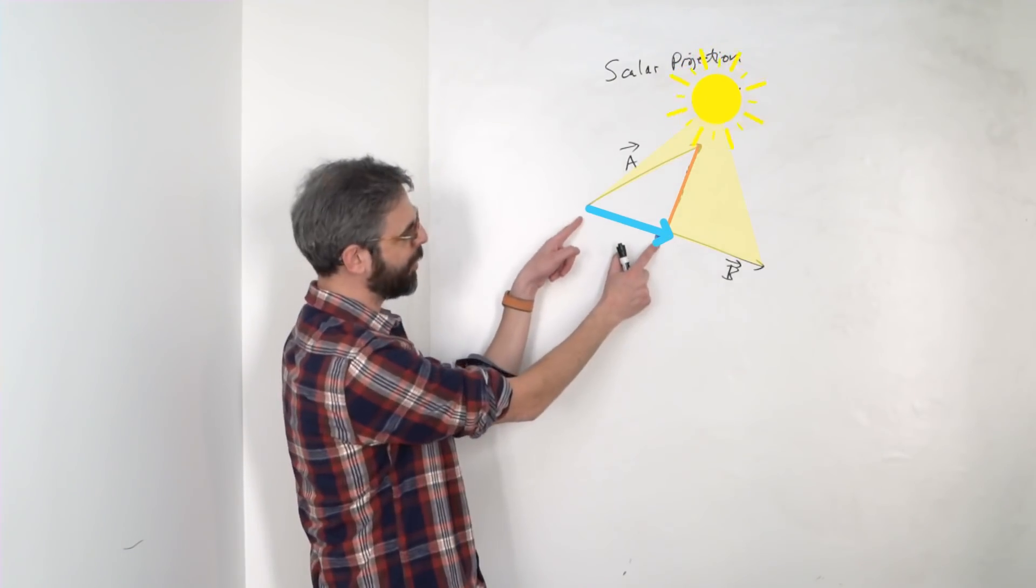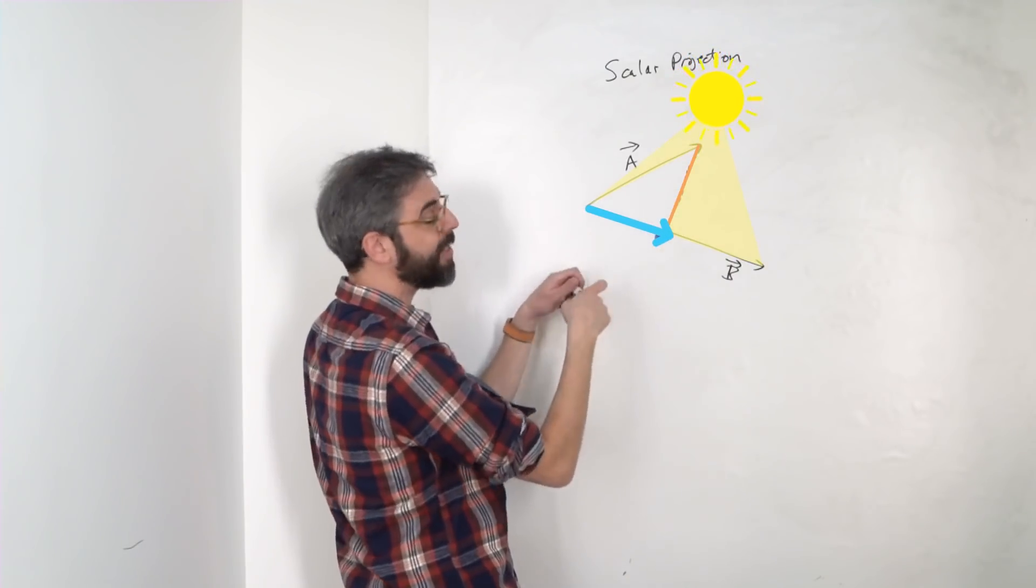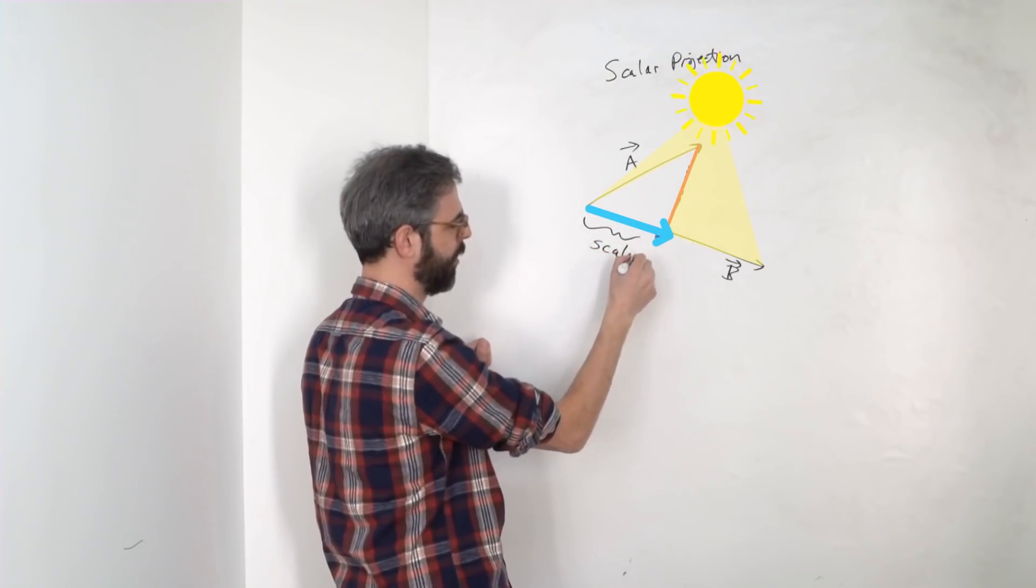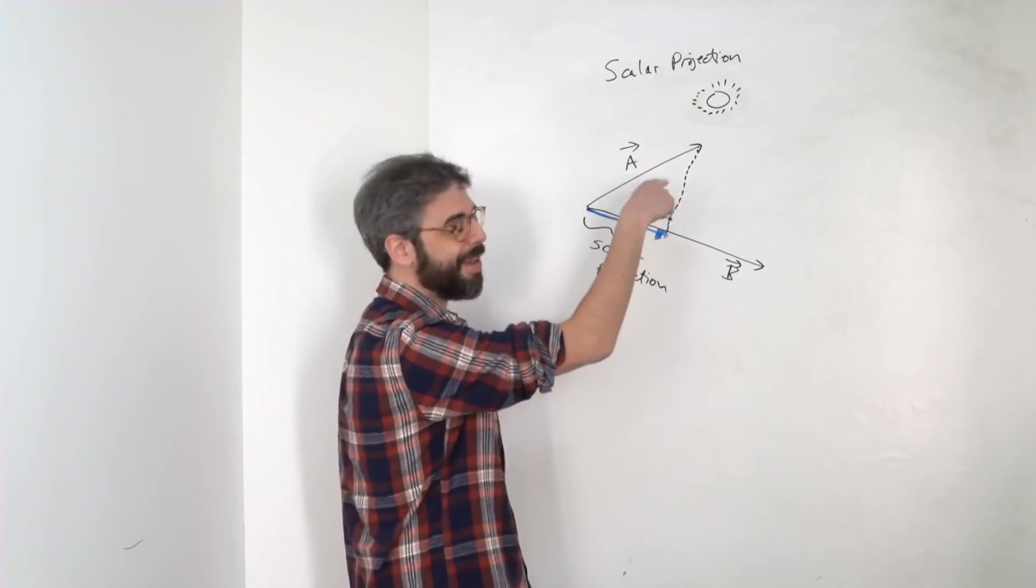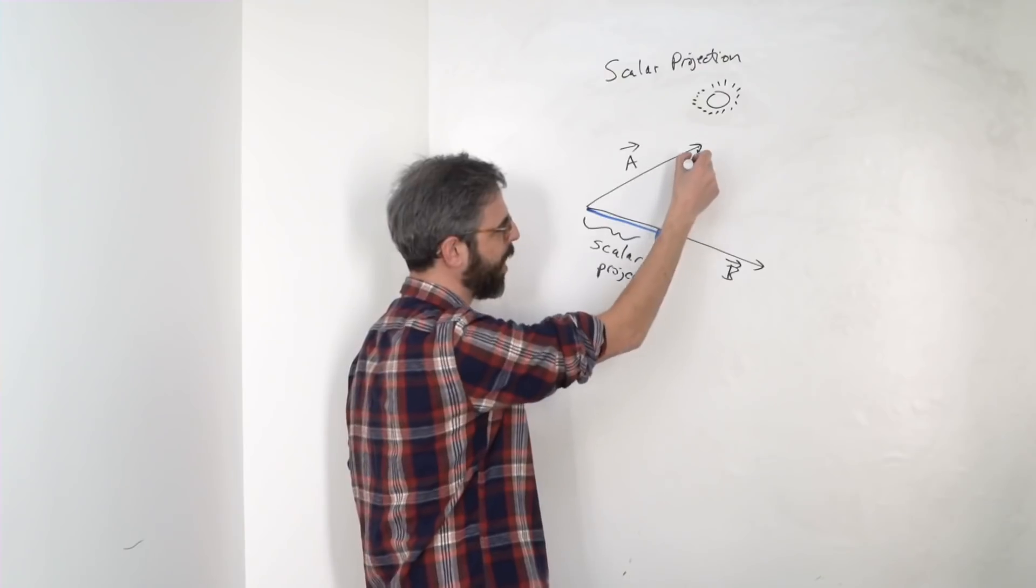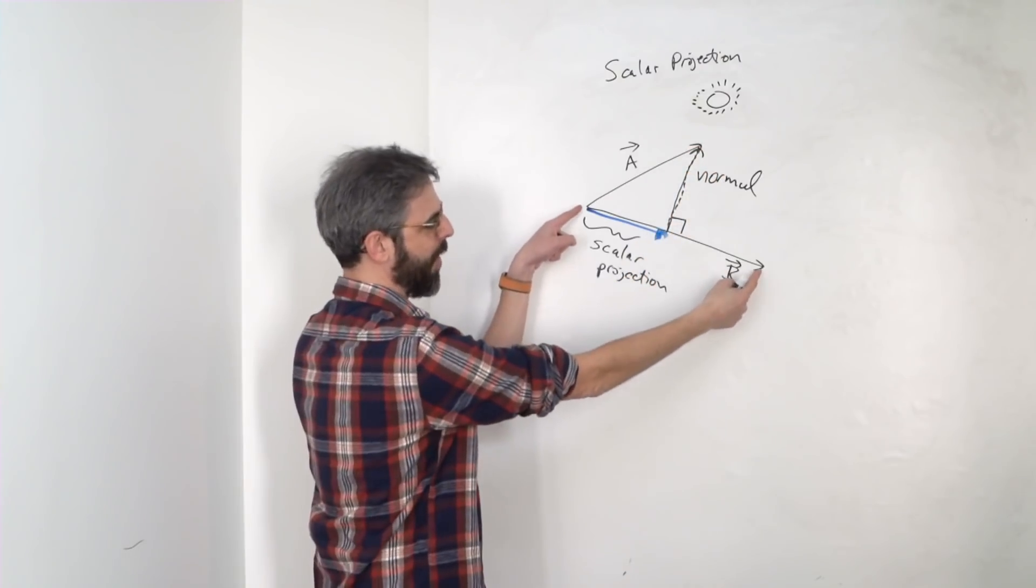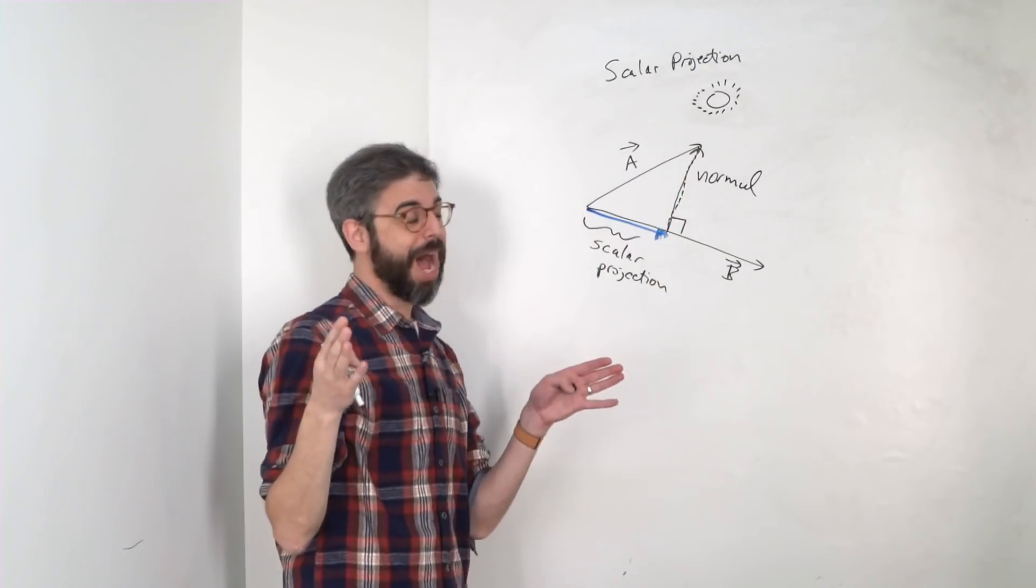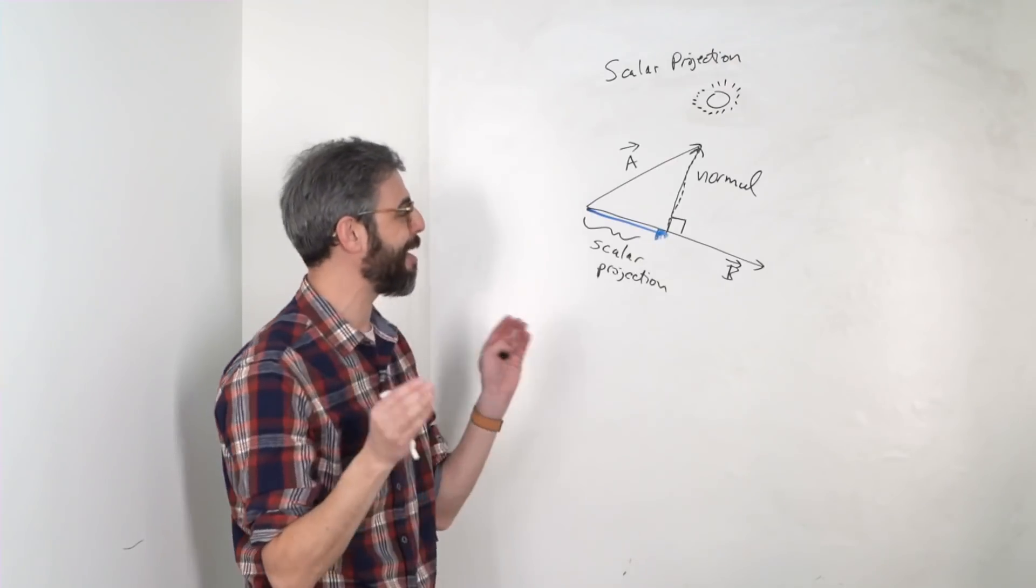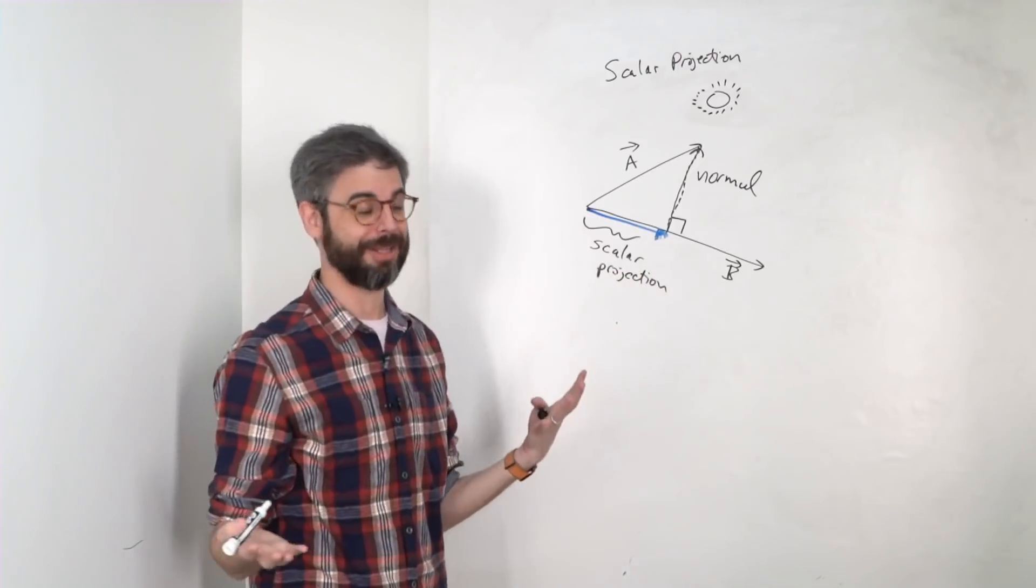You could imagine a shadow being cast of the vector A onto the vector B. This blue vector is then the vector projection of A onto B. Its magnitude, or its length, is the scalar projection. This is a right angle here. This vector pointing up is known as the normal. It's perpendicular at this point. Let's say I want to know the scalar projection. What is the length of this vector? How do I calculate that?